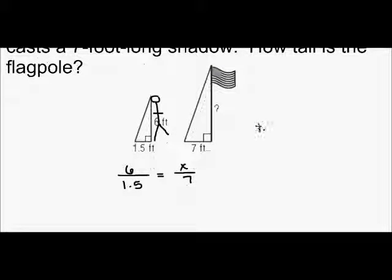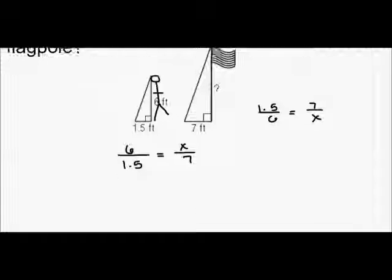If you wrote instead, if you wrote 1.5 over 6 equals 7 over X, that's fine. You will get the exact same value for X, but I'm just going to do it this way.